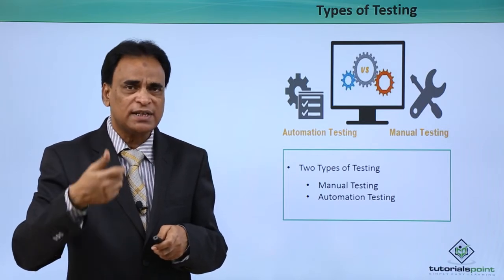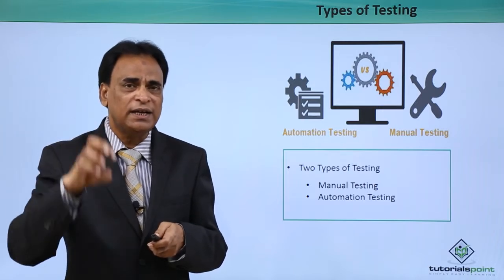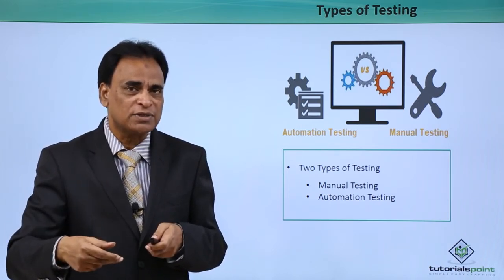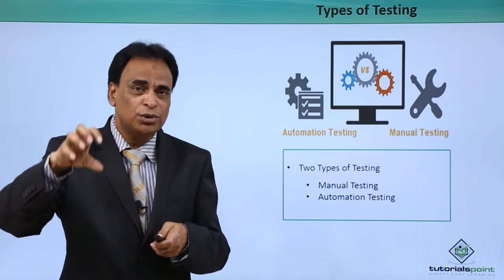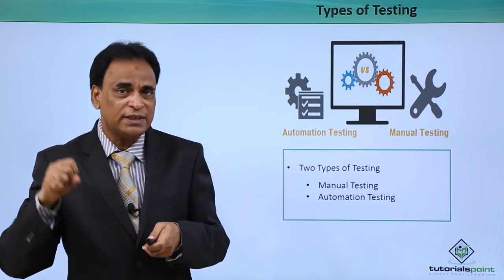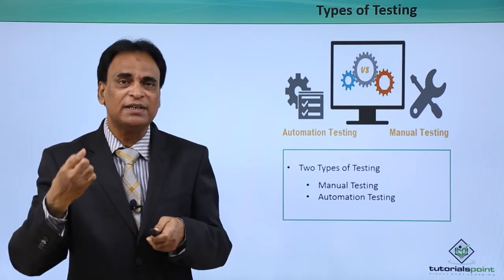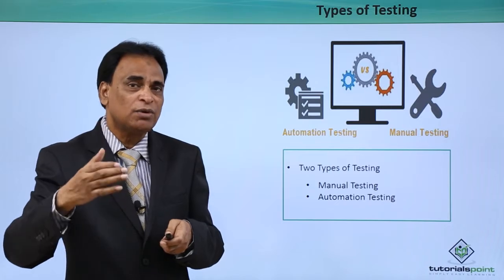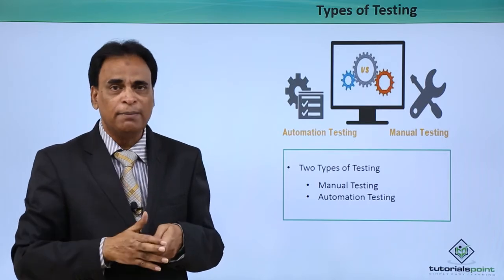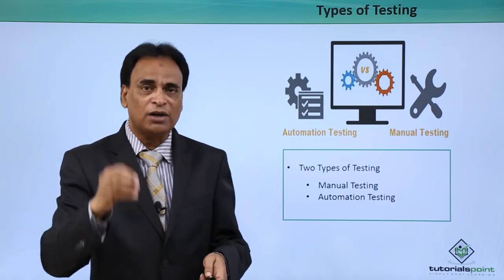There are two different types of testing. One is called manual testing, and the second is called automation testing. Manual testing consists of manually testing the entire application or product by testing engineers. In the automated process, you use certain tools, solutions, and software that test the entire application automatically and generate reports. Those reports are analyzed to fix the issues and bugs that may exist in the application or product. So testing can be done manually or through an automated process.